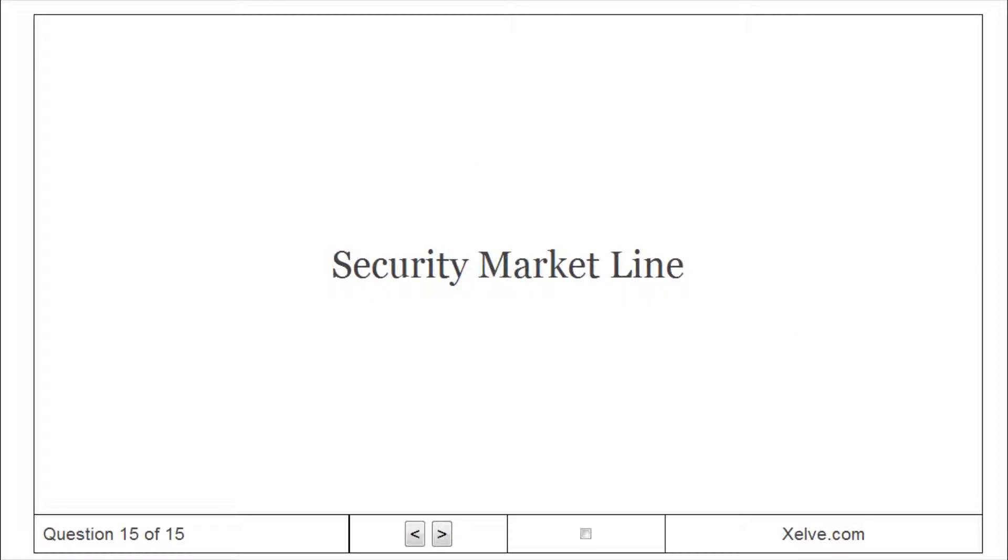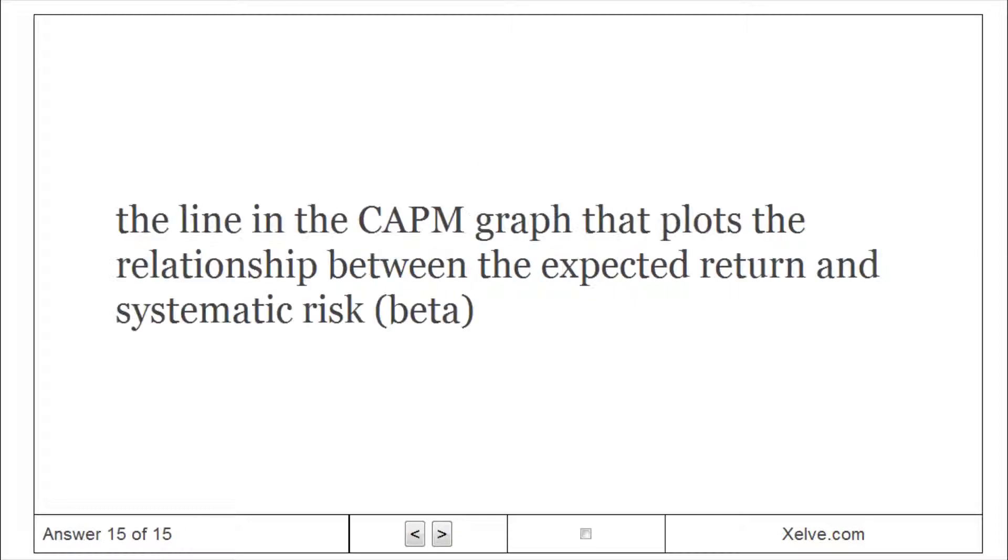Security market line: the line in the CAPM graph that plots the relationship between the expected return and systematic risk (beta).